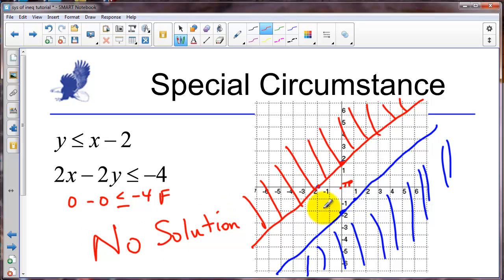So when we have parallel lines, if the shading goes the other directions, our solutions would be in this middle area. But when the shading goes like this, where there is no overlap, we have no solution. So good luck as you solve and graph your own systems of inequalities.